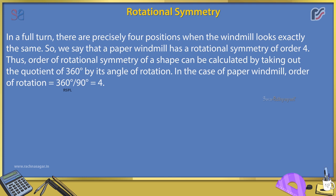So, we say that a paper windmill has a rotational symmetry of order 4. Thus, order of rotational symmetry of a shape can be calculated by dividing 360 degrees by its angle of rotation.